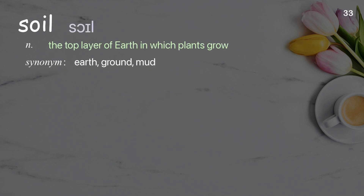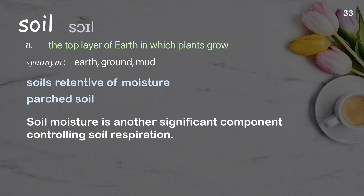Soil: the top layer of earth in which plants grow. Examples: soils retentive of moisture; parched soil. Soil moisture is another significant component controlling soil respiration.